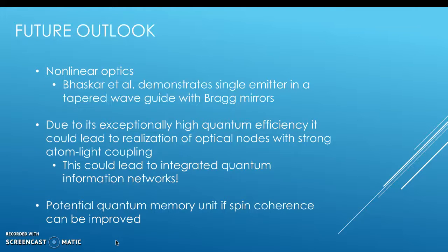Looking at the future outlook, the current state of the art is nonlinear optics. Bhaskar et al. at Harvard is demonstrating single-emitter GeV centers in a tapered waveguide with Bragg mirrors, performing photonic coupling and photon extinction. Due to its exceptionally high quantum efficiency, this could lead to the realization of optical nodes with strong atom-like coupling. GeV centers have been shown to have stronger coupling than any other quantum system yet tested, potentially leading to integrated quantum information networks. Finally, there is potential for quantum memory units if spin coherence can be improved by a couple orders of magnitude to where NV centers and superconducting qubits currently are.